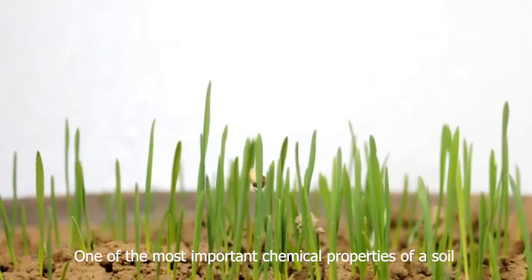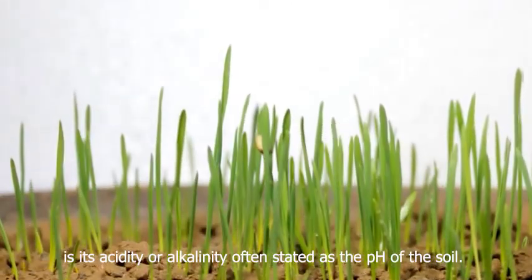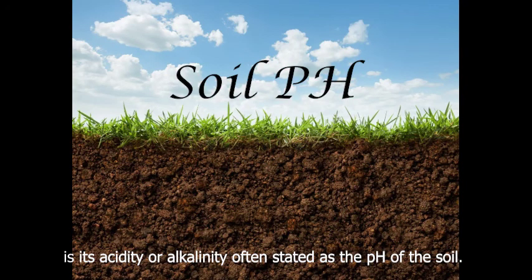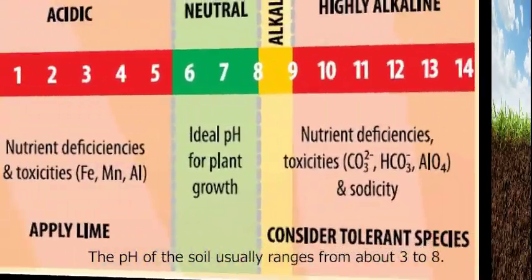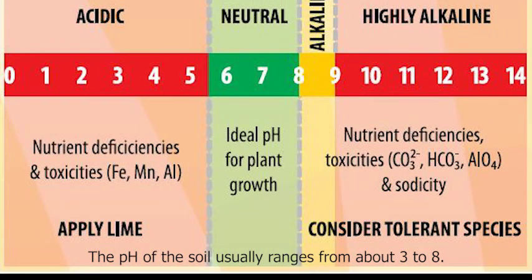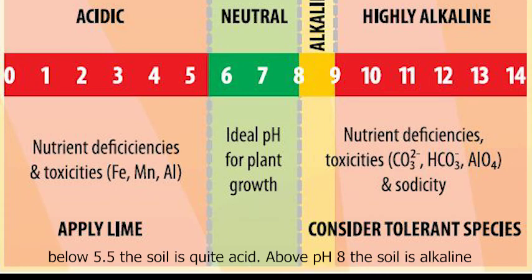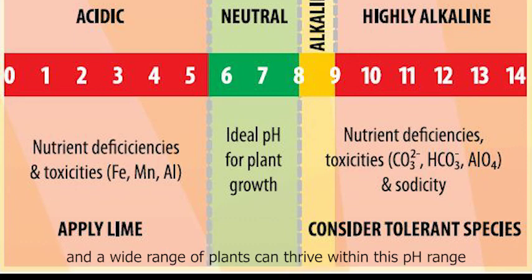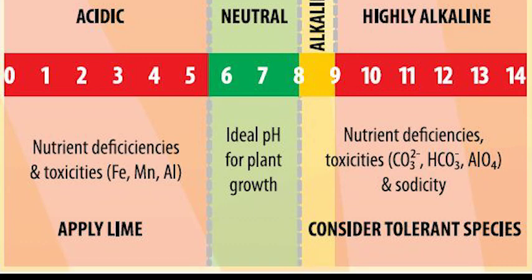One of the most important chemical properties of a soil is its acidity or alkalinity, often stated as the pH of the soil. The pH of the soil usually ranges from about 3 to 8. Below 5.5 the soil is quite acidic. Above pH 8.5 the soil is alkaline. Soil with a pH in the range of 5.5 to 8.5 tends to be the most flexible, and a wide range of plants can thrive within this pH range.